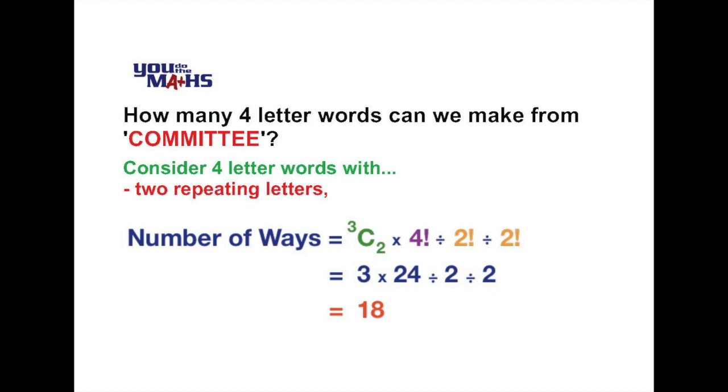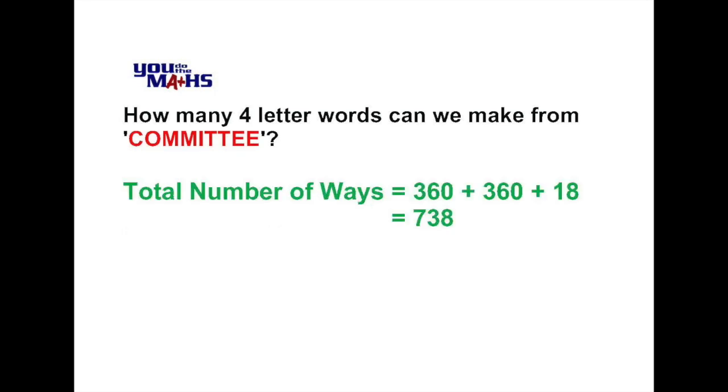Now that we've looked at the three separate cases that can occur when we're choosing letters from the word committee to form four letter words, we need to look at a way to actually achieve the total. Because each case, in other words four letters not repeated all the way through to two pairs of letters repeated, are separate, they can't occur together. What we'll do is we'll add the totals that we've got before to achieve the total number of ways. So what we get is 360 plus 360 plus 18, and that comes to 738.